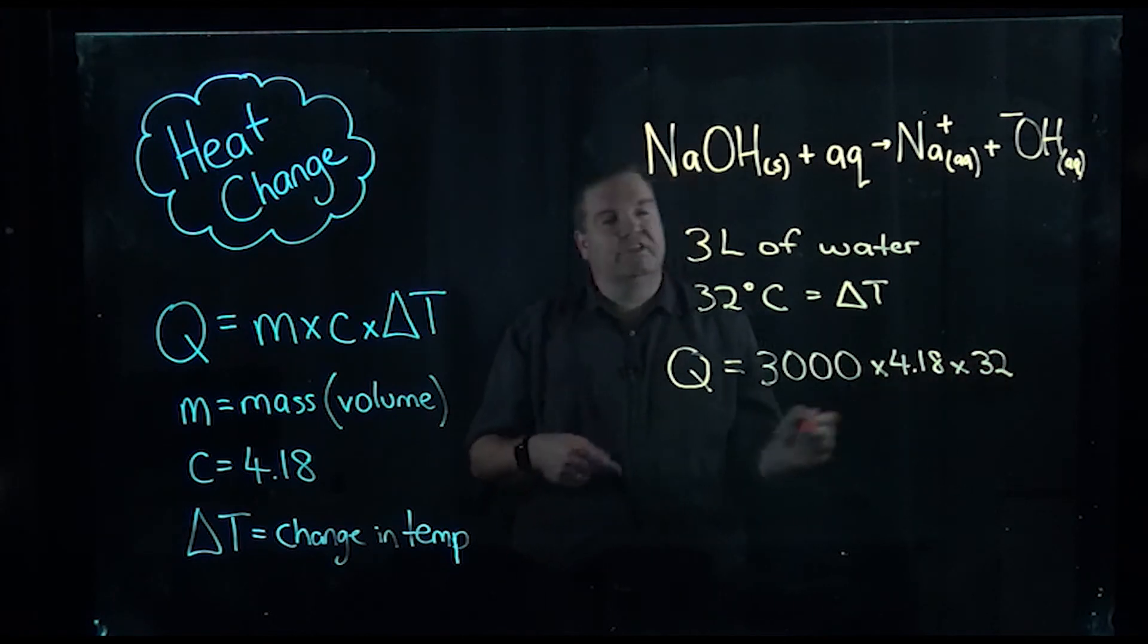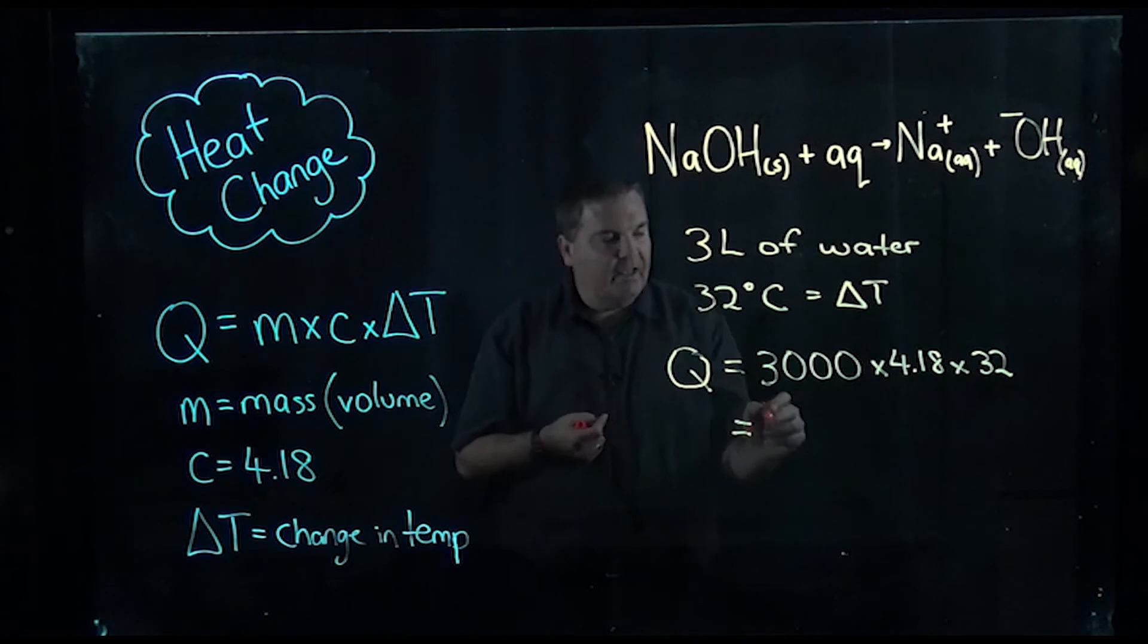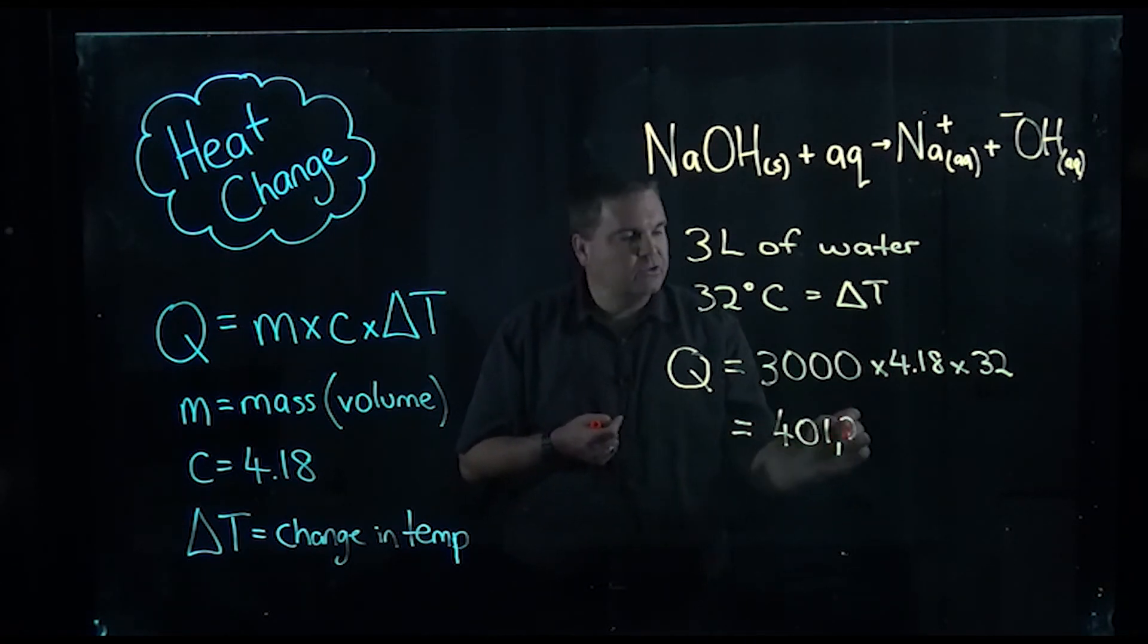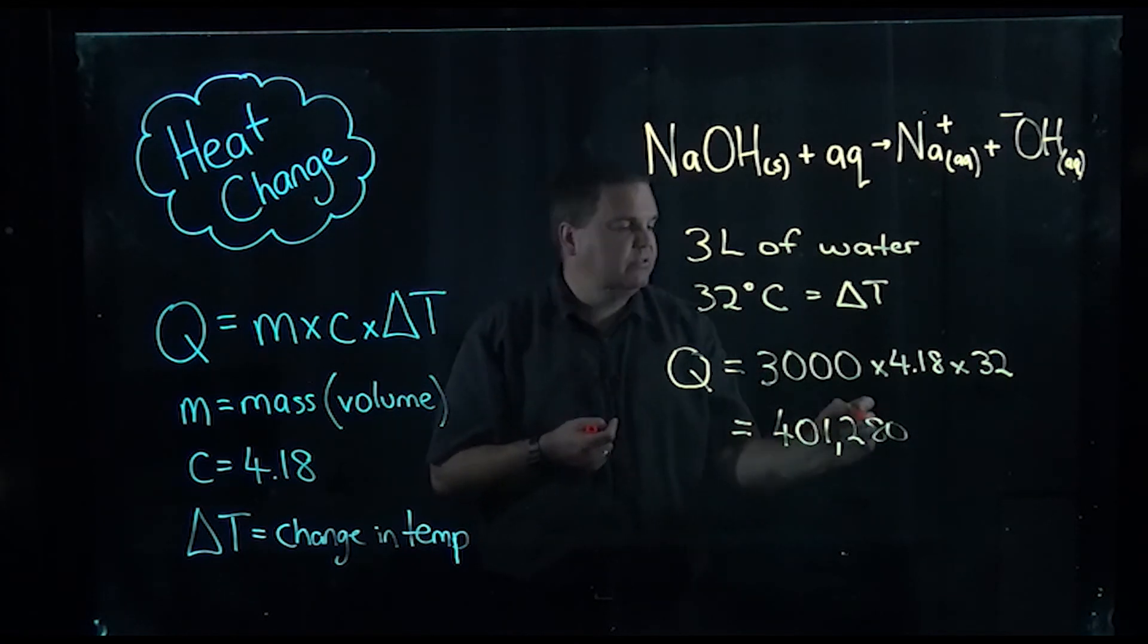So we're changing our volume into milliliters, we times that by 4.18 which is the constant, and then we times it by the temperature change which is 32 degrees. So if we do this we work out a value of 401,280. As I said hopefully you can still see my pen here guys, sorry I'll swap to a new one in a sec.